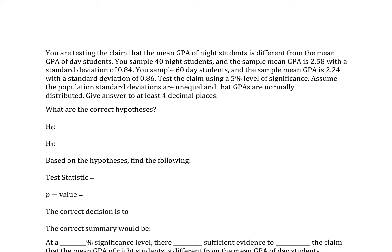You are testing the claim that the mean GPA of night students is different from the mean GPA of day students. You sample 40 night students and the sample mean GPA is 2.58 with a standard deviation of 0.84. You sample 60 day students and the sample mean GPA is 2.24 with a standard deviation of 0.86. Test the claim using a 5% level of significance. Assume the population standard deviations are unequal and that GPAs are normally distributed. Give answers to at least four decimal places.